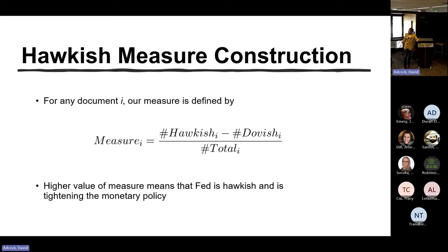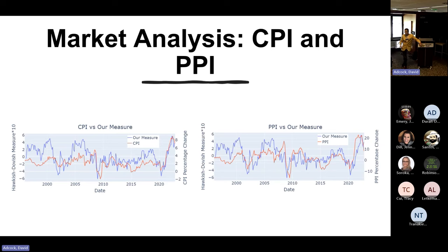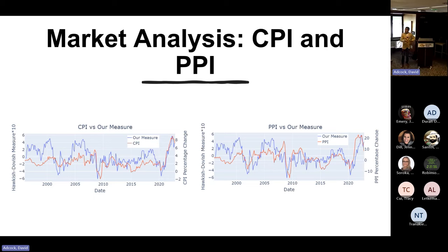With the trained model, we create a hawkishness measure for each document: the number of hawkish sentences minus dovish sentences, divided by the total number of sentences in that document. Qualitatively, this measure not only tracks high inflation periods like the recent one, but also correctly tracked deflationary periods like the 2008 crisis, the 2001 dot-com bubble crisis, and others — showing our model works at an aggregate level in understanding macroeconomic conditions.